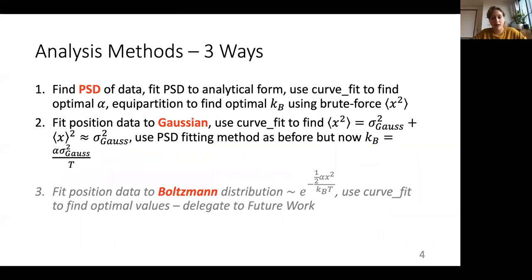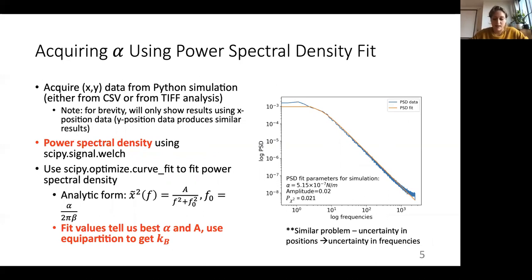So once this data is acquired, we can calculate the Boltzmann constant in a couple of ways. The first two I'm going to explore in detail here. The third I will relegate to future work. And the first two methods are related because they use the same method of acquiring the spring stiffness, but they differ in how they calculate the Boltzmann's constant. So the way that we acquired the spring stiffness for 200 milliamps was to plot the power spectral density of the position data, which is essentially the fast Fourier transform of the data. And I used the scipy signal welch package to do this. And then I performed a curve fit to the analytical form of the power spectral density, which I've listed here at the bottom. And then the optimal fit values tell us the optimal amplitude and spring stiffness. And I've shown an example here of this fit.